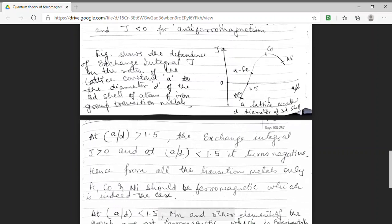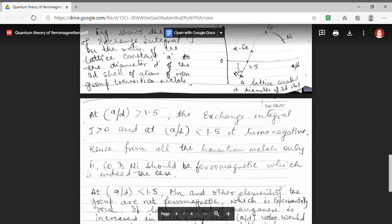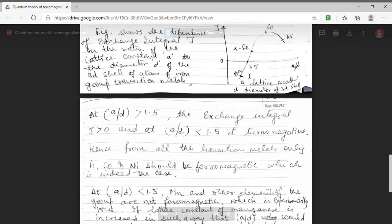Now for A by D less than 1.5, we have J to be negative. That means these materials should not show ferromagnetic behavior. For example, here I have shown manganese. For Mn, A by D is less than 1.5. Hence manganese should not show ferromagnetism, which is experimentally true behavior also. Now we are increasing the lattice constant A of manganese in such a way that its A by D exceeds 1.5.